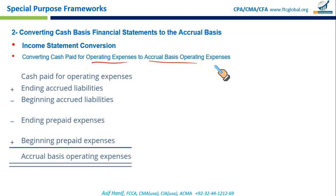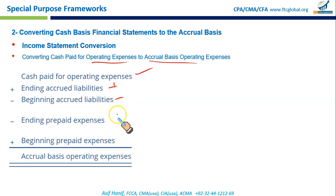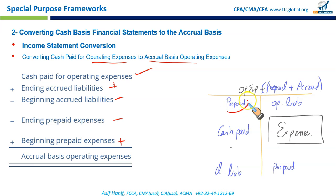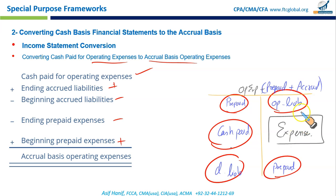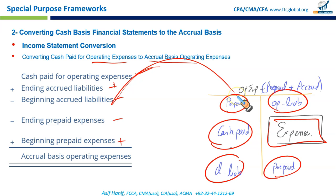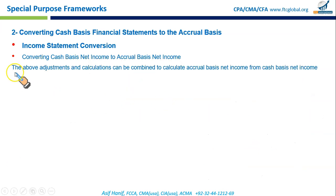For converting cash paid for operating expenses to accrual-based operating expenses: take cash paid for operating expenses, add ending accruals, deduct opening accruals, add beginning prepaid expenses, and deduct closing prepaid expenses. A T-account format using operating expenses with opening and closing prepaid and accrued amounts, with cash paid, yields accrual-based expenses as the balancing figure.